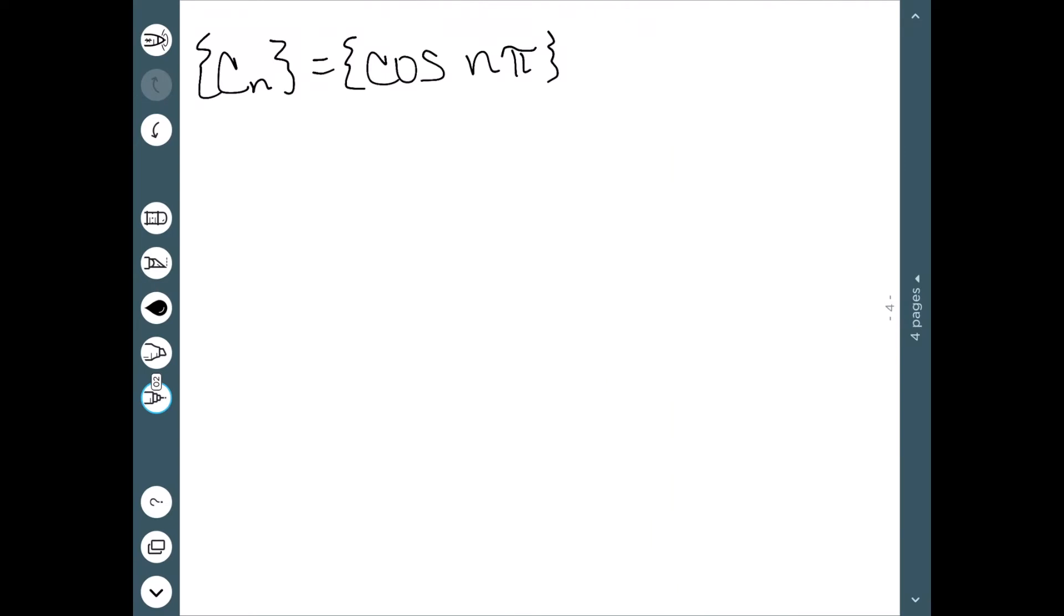Next I'm going to look at cosine of n pi. Cosine of pi is negative 1. Cosine of 2 pi, 3 pi, 4 pi, 5 pi, etc. You can see that we're going to alternate between negative 1 and positive 1. So this particular sequence is going to diverge.